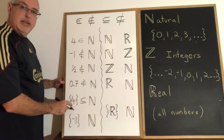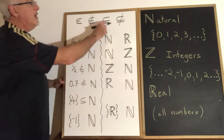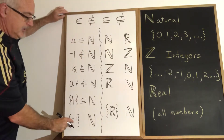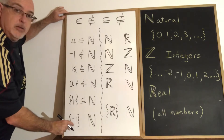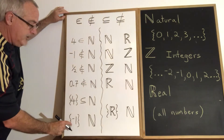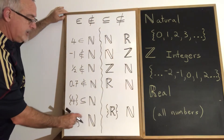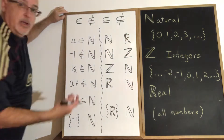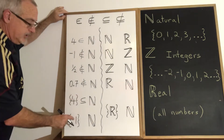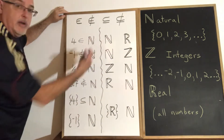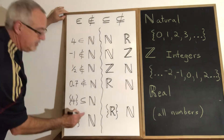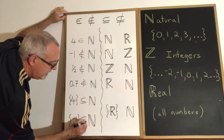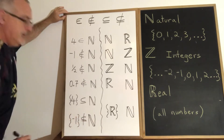Because it's a set, I want to use one of the subset symbols. The set that includes negative one — is it a subset of natural numbers? No, because its element, negative one, is not a natural number. So in this case I need the symbol 'is not a subset of.'